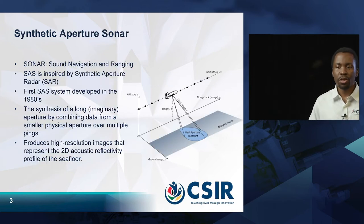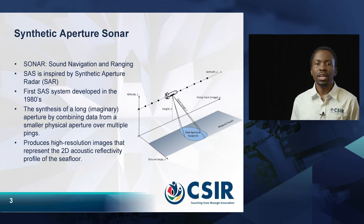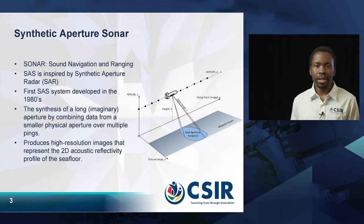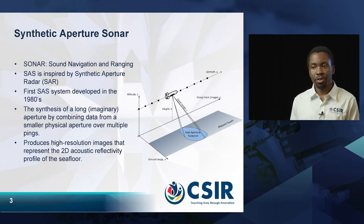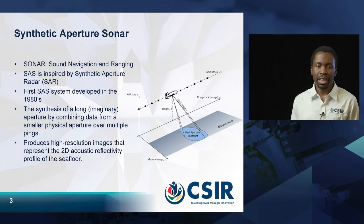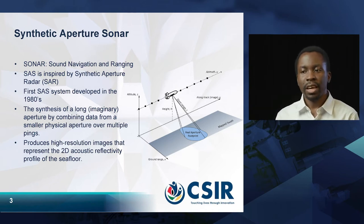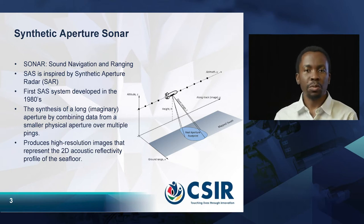Synthetic aperture sonar — for those unfamiliar with the term — sonar stands for Sound Navigation and Ranging, and traditionally describes the way submarines or any other Navy vessel uses sound waves to navigate and detect objects underwater. The term is derived from its terrestrial counterpart radar, which uses radio waves for detection and ranging of objects above water. Synthetic aperture sonar, or SAS for short, is inspired by its radar counterpart, synthetic aperture radar. The first SAS system was developed in the 1980s. As its name implies, it's the synthesis of a long aperture by combining data from a smaller physical aperture over multiple pings.